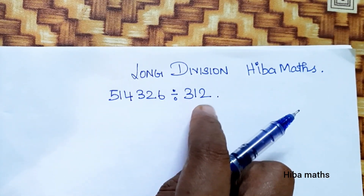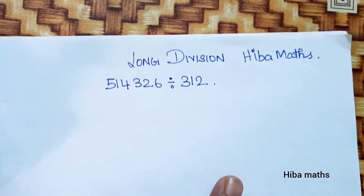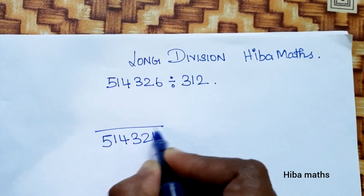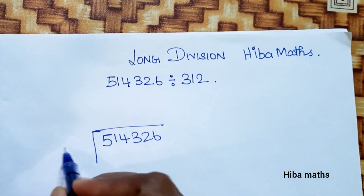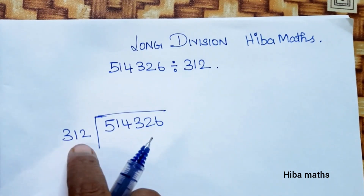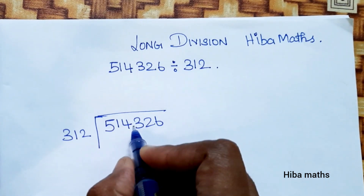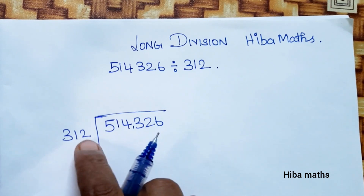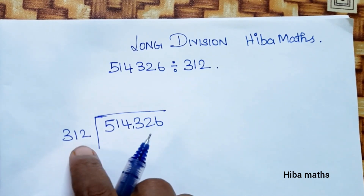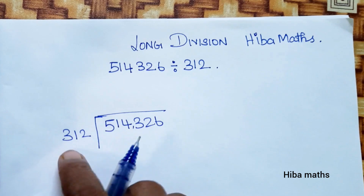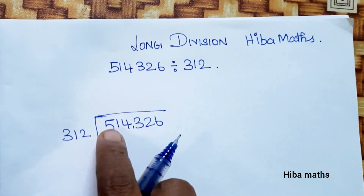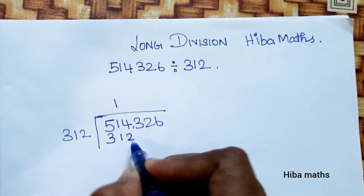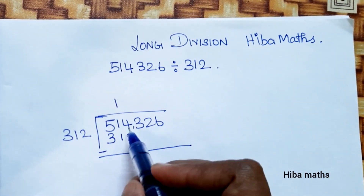How to solve this question? 514326 divided by 312. If you divide the number, you will look at the first three digits: 514. If you do 312, 312 goes one time. It will be 312.